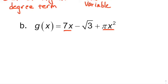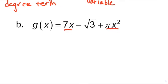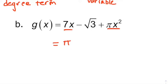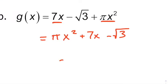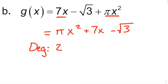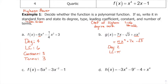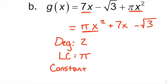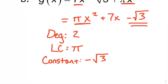On this next one, we have x squared and x, so we need to reorder this to get it in standard form. This one has a pi out in front, so we'll write pi x squared first, then positive 7x, and then the last thing doesn't have an x, so we put negative square root of 3 at the end. The degree is 2. The leading coefficient — the thing in front of the highest power term — is pi. The constant is negative square root of 3. The number of terms is three.